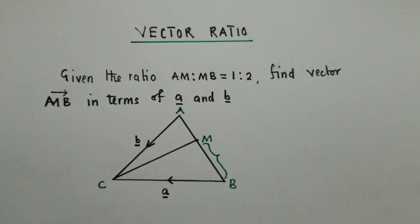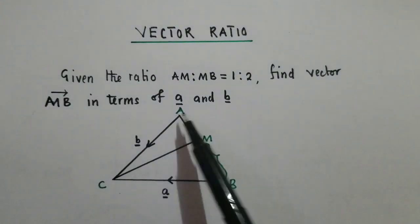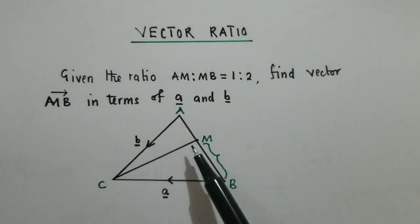Now, if you have been given the ratio, what are we supposed to do? The first thing will be to find vector AB, because MB is falling on AB.